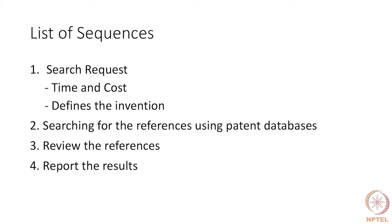Number one: a search request is made by the patent attorney to the searcher. This search request indicates the time and cost to be expended in the search, because that is critical. It defines the invention or the disclosure of the invention which needs to be searched, and it also gives some broad categories of areas where the patent has to be searched for.